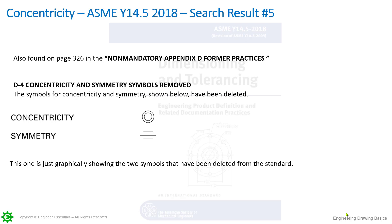This is the last search result for concentricity in the 2018 standard — search result number five, also found on page 326 in the non-mandatory Appendix D, Former Practices. D-4, Concentricity and Symmetry Symbols Removed. It states: the symbols for concentricity and symmetry shown below have been deleted. They show the two symbols as a graphical representation, so if anybody wanted to argue, they could see specifically that these are the symbols — there's no argument that it was only a definition or only a statement. This tops it off: the symbols for concentricity and symmetry are gone, deleted, no longer to be used.